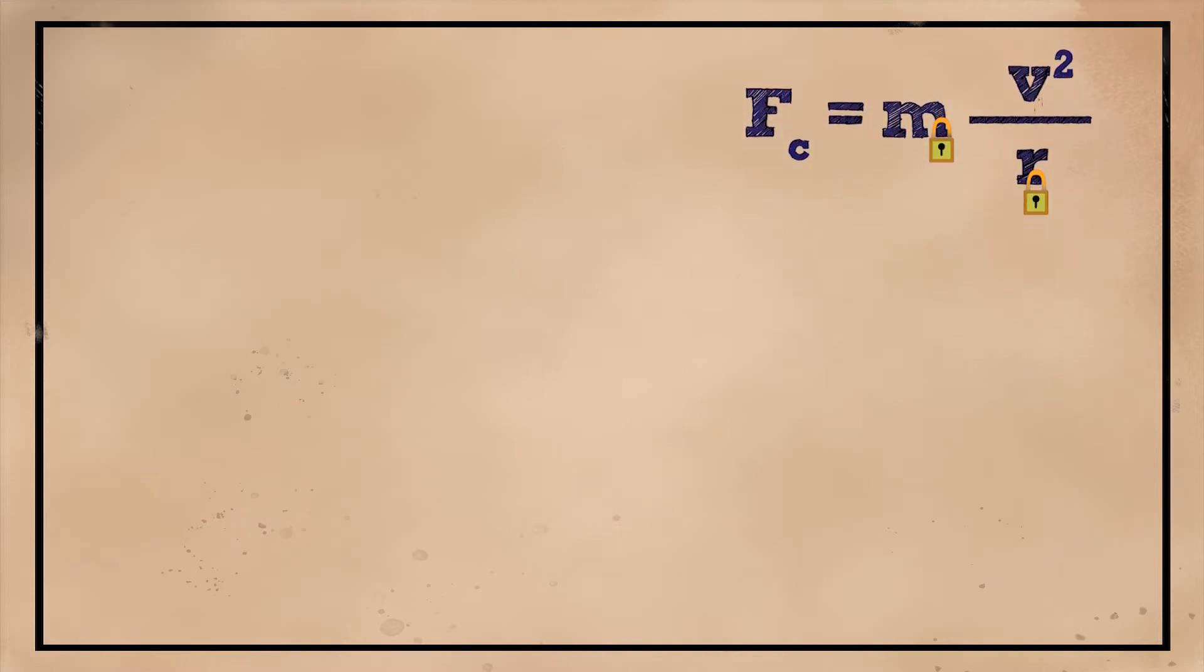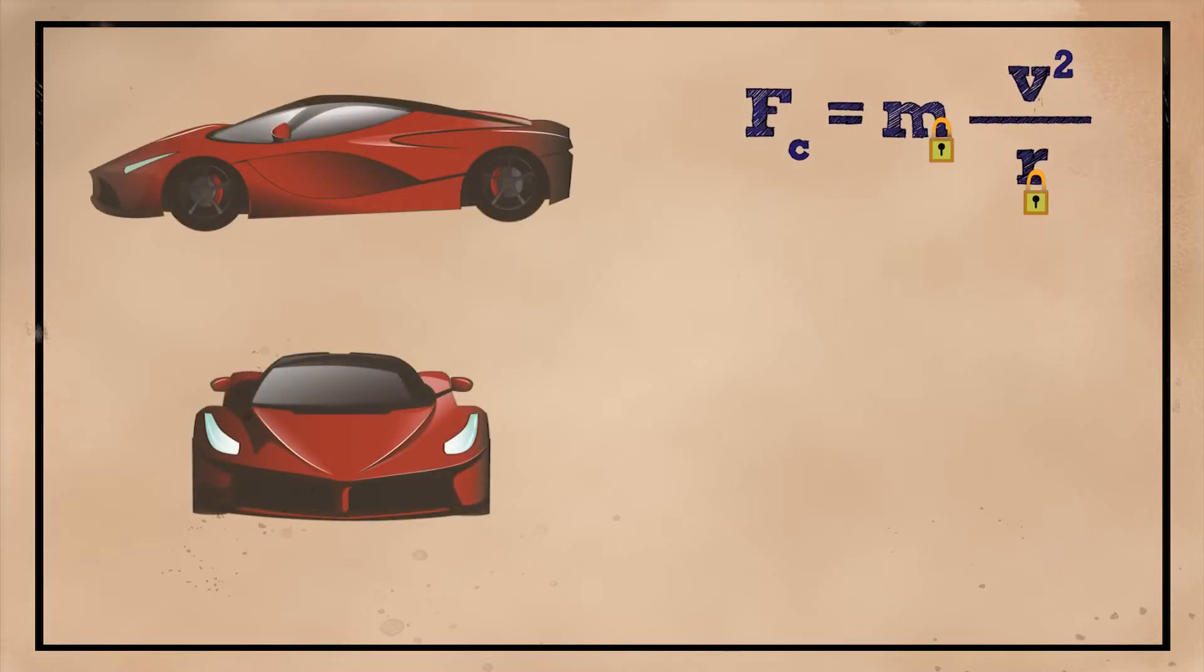So, as we already saw, the traction between the tires and the road provides the centripetal force needed for the car to stay on the road. As long as this friction force is larger than the needed centripetal force, then we don't have a problem.